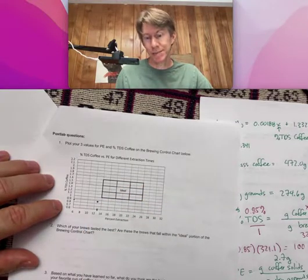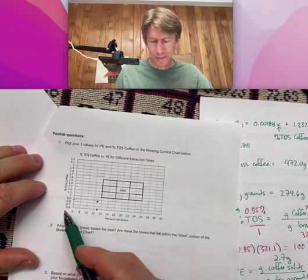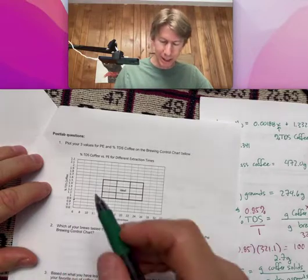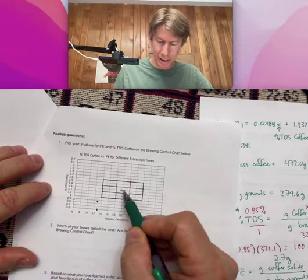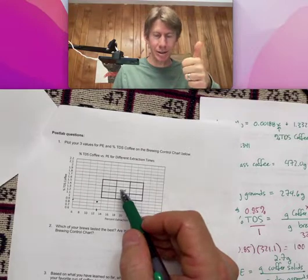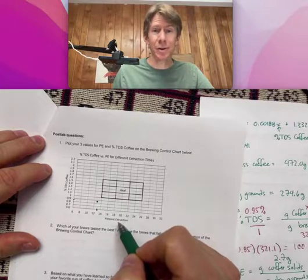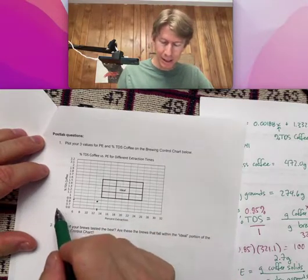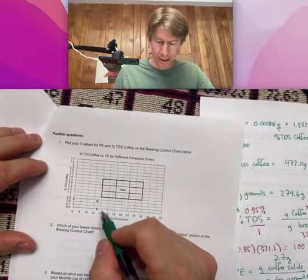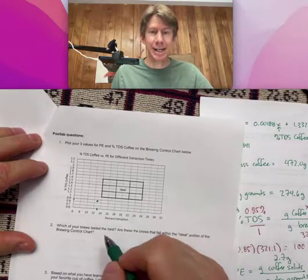So I am under-extracted and weak. So I will have two more attempts. My other attempts should take me somewhere up in this direction, because I'm going to increase my extraction time, and increasing extraction time should extract more solids from the coffee beans. And for the same amount of water, that will lead to a higher percent TDS as well.